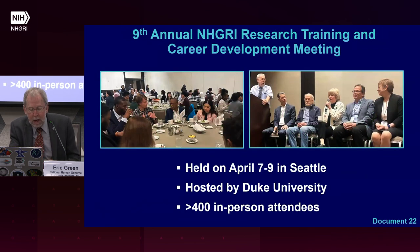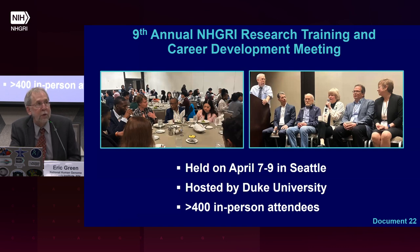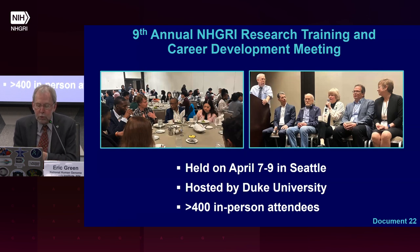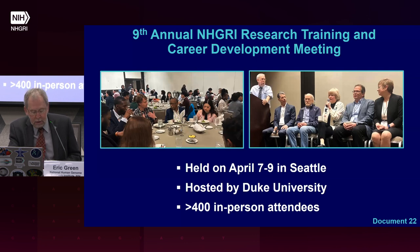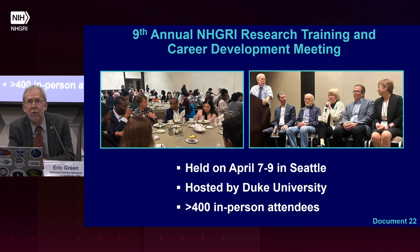The NHGRI training program aims to prepare a talented and diverse genomic workforce through both institutional and individual-level funding via individual fellowship and career development awards, institutional training awards, and diversity supplements at the undergraduate, postbaccalaureate, graduate, postdoctoral, and faculty levels. The ninth annual research training and career development meeting was held in Seattle in April and hosted by Duke University. The meeting brought together over 400 in-person attendees, with trainees presenting posters, giving lightning talks, and attending scientific lectures. Other highlights included a keynote talk by Wiley Burke, a plenary panel discussion with outstanding local genomic talent, and networking lunches with PIs and NHGRI staff.